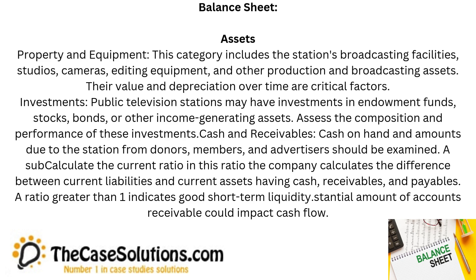Cash and Receivables: Cash on hand and amounts due to the station from donors, members, and advertisers should be examined. Calculate the current ratio — the difference between current assets and current liabilities, including cash, receivables, and payables. A ratio greater than 1 indicates good short-term liquidity, though a substantial amount of accounts receivable could impact cash flow.